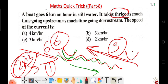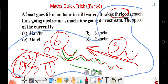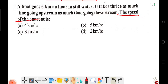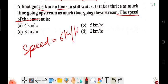The question asks for the speed of the current. We could solve this using equations, but that would be time consuming. Instead, we'll use tricks and tips to solve it within 30 to 40 seconds. The boat's speed is 6 kilometers per hour.